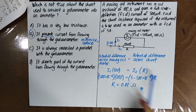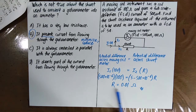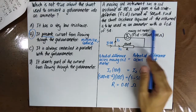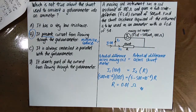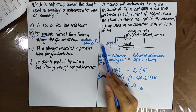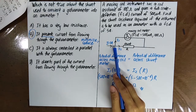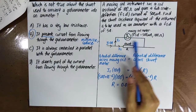By using this formula, you can find the resistance of the shunt. The resistance of the shunt should be very small compared to the resistance of the meter, so that most of the current will flow through the shunt and very little current will flow through the meter.